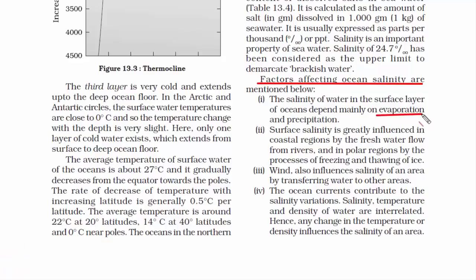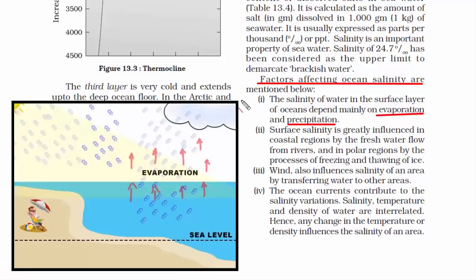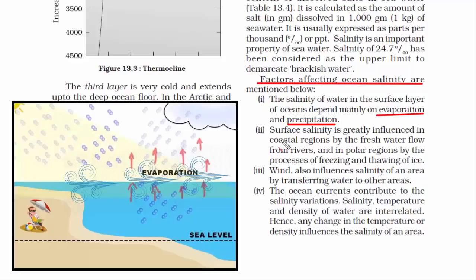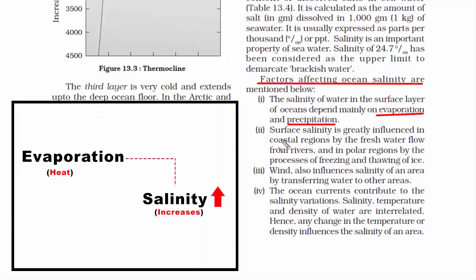The first factor is evaporation and precipitation. Evaporation is the process through which water molecules turn into water vapour with the help of heat. Evaporation can only take away water volume, not salt content. Hot wind over the ocean causes most of the water to evaporate, but the salt does not evaporate with the water. This makes the salt concentration remain high in the remaining ocean water. Therefore, evaporation increases the salinity of ocean water.